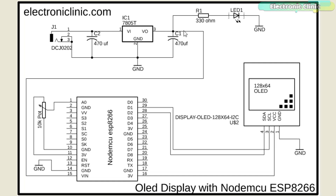For the NodeMCU ESP8266, I am using the same 5V regulator power supply. The output of the voltage regulator is connected with the VIN pin of the NodeMCU ESP8266. Don't forget to connect the ground of the power supply with the ground pin of the NodeMCU ESP8266. The same potentiometer is connected with analog pin A0. Note that the NodeMCU ESP8266 has only one analog pin, while the ESP32 has multiple analog pins. The SCL and SDA pins of the OLED module are connected with D1 and D2, while VCC and ground are connected with 3.3V and ground.